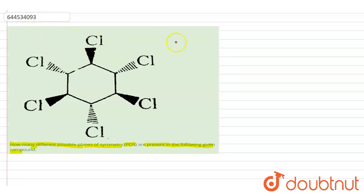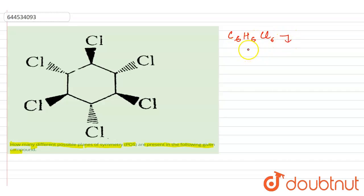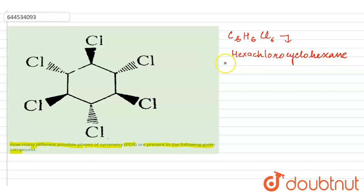First of all, we will see what structure is given. We can see it is C6H6Cl6. This structure is known by its IUPAC name, which is hexachlorocyclohexane.